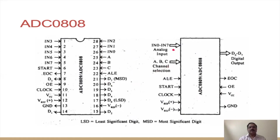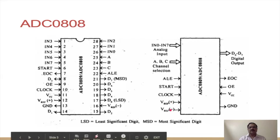On the input side, IN0 to IN7 are the eight analog input signals called channels. A, B, C are three address inputs used for channel selection. Depending on the status of A, B, C, one of the eight channels is selected. ALE is used for latching, and the Start of Conversion input should go high whenever you want to start a conversion. There is also an external clock signal and reference voltage inputs, plus and minus.